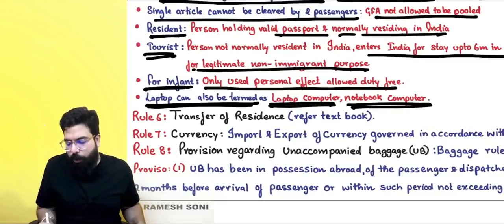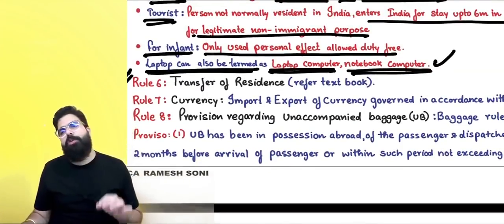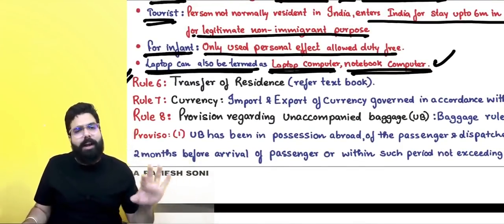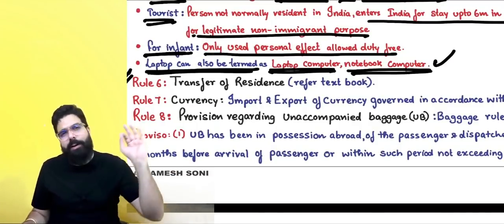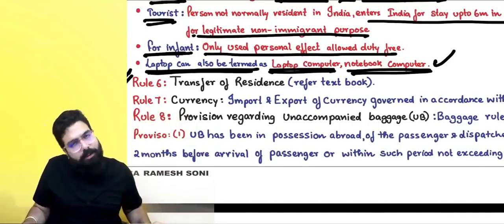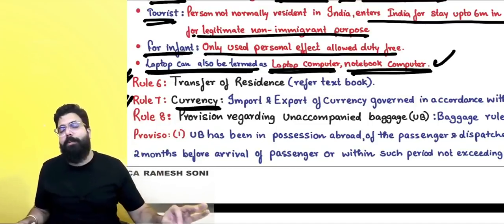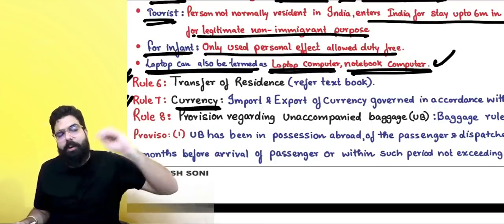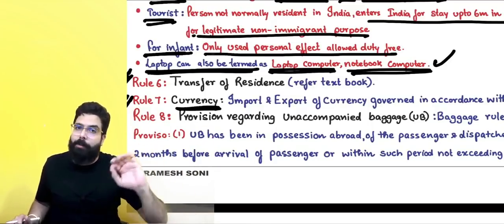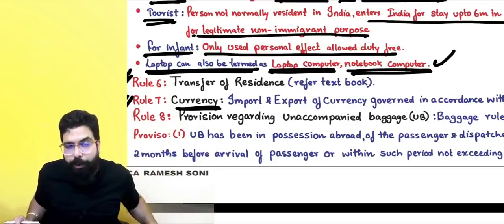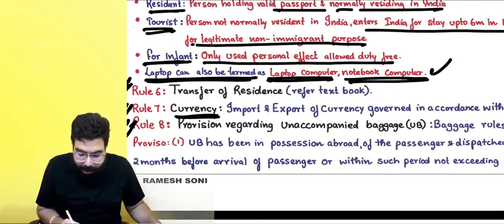Rule 6 talks about transfer of residence — it is generally not asked in exams, so you may read it from the textbook. Rule 7 covers currency — currency import and export is governed by FEMA. Rule 8 talks about unaccompanied baggage.